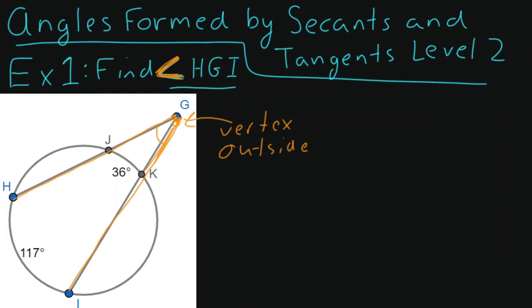Which is very important because that means we'll have to use this formula. The measure of angle 1 is equal to 1 half arc X minus arc Y. And that minus actually comes from when it's a vertex outside the circle.